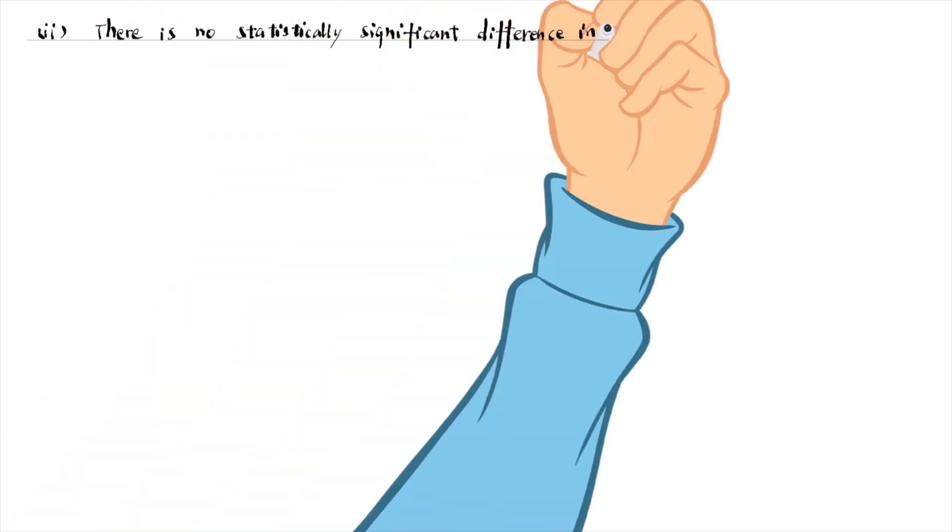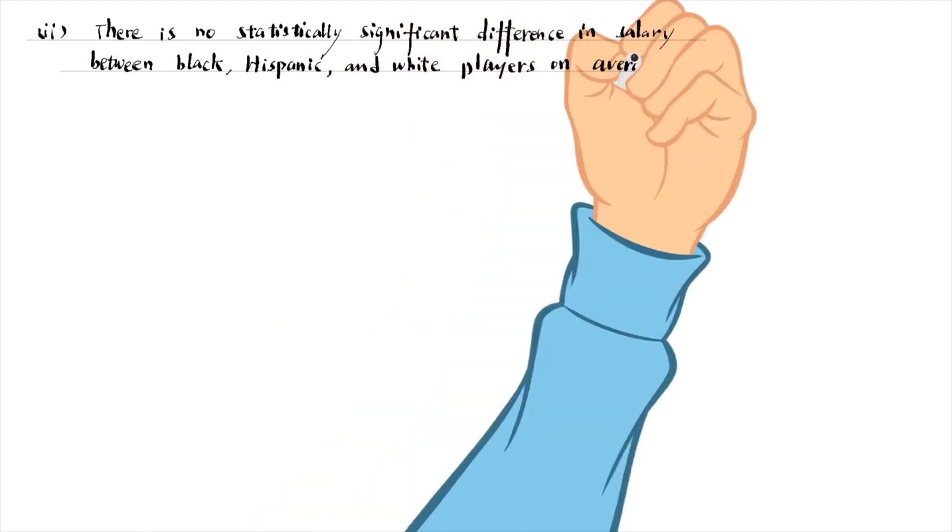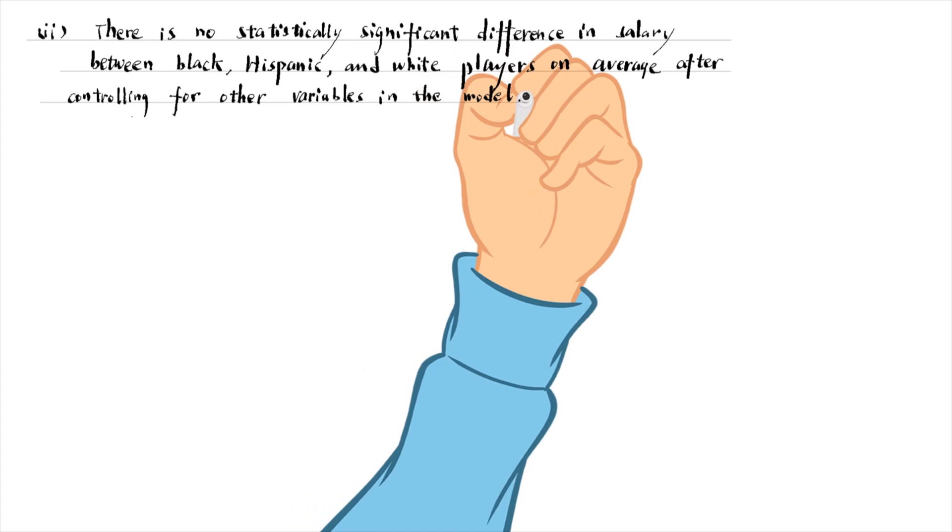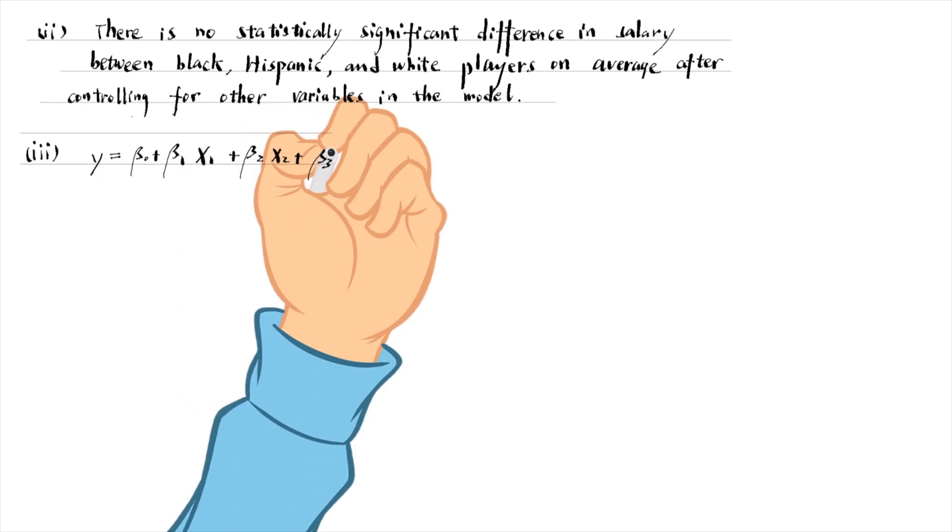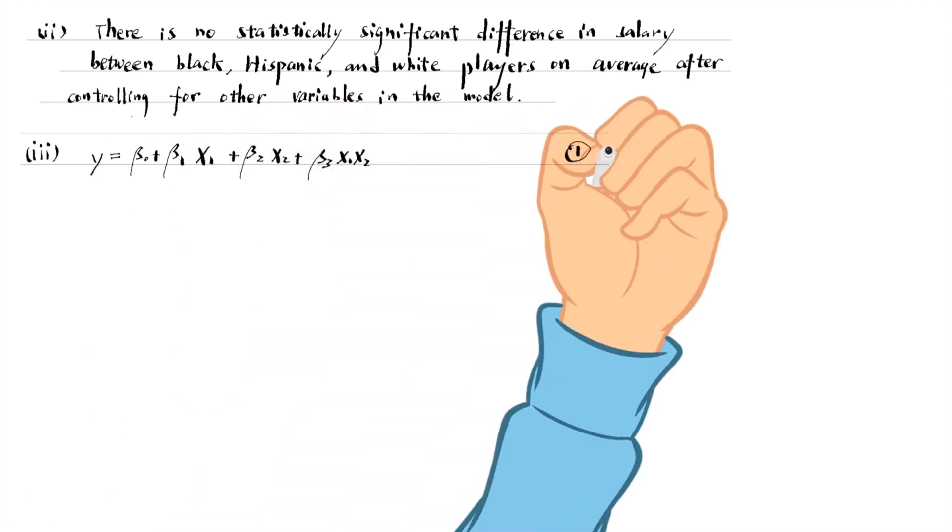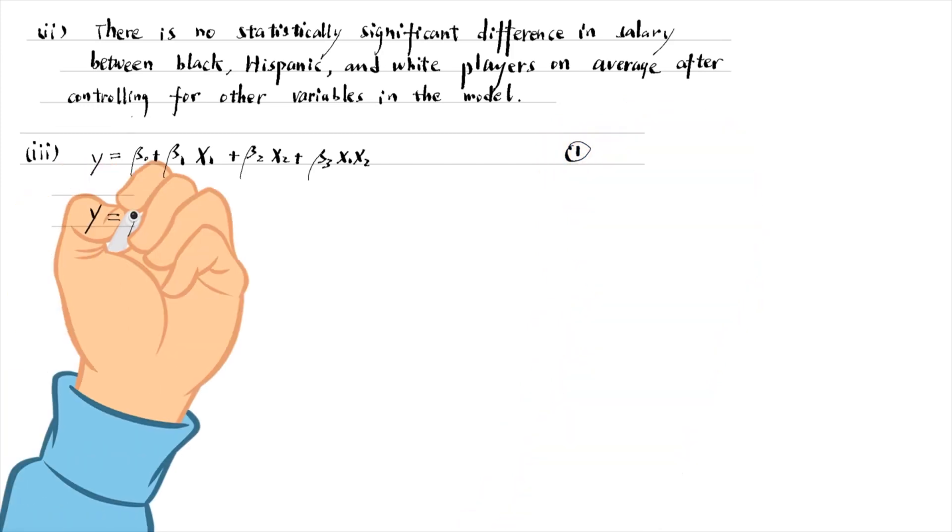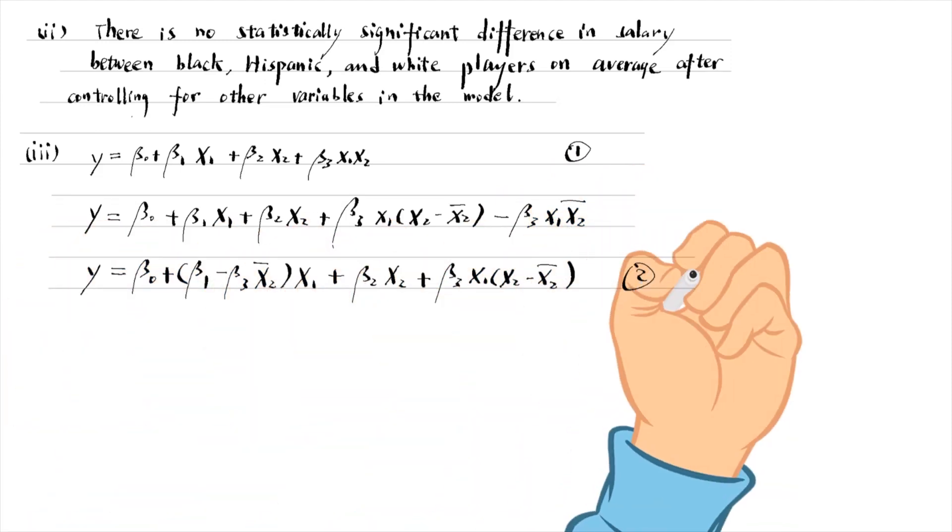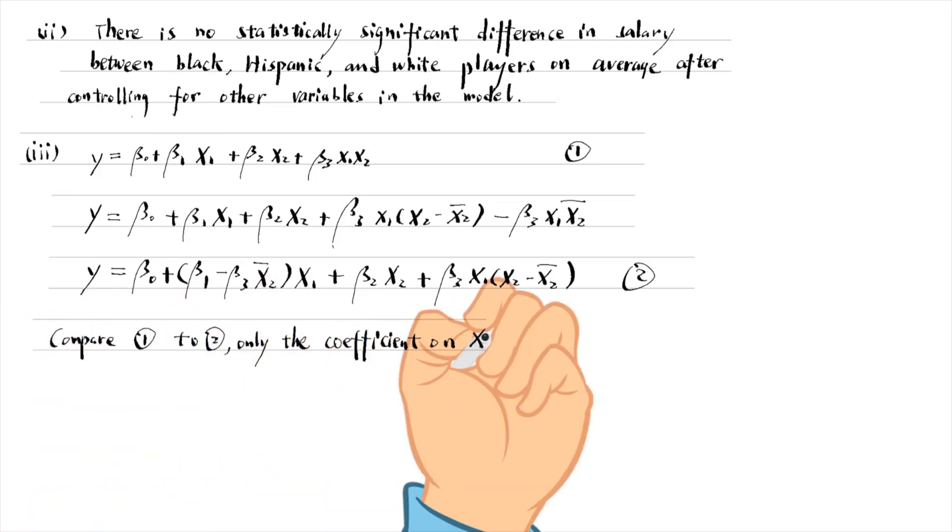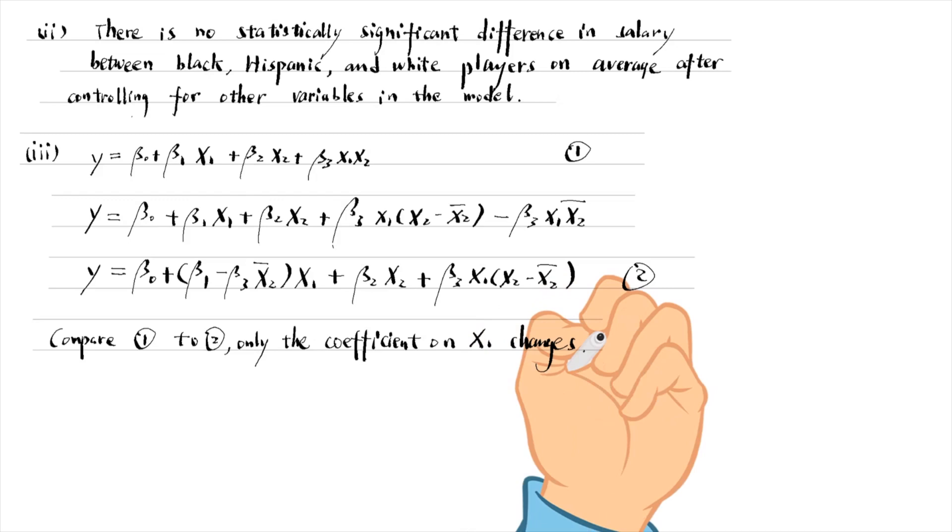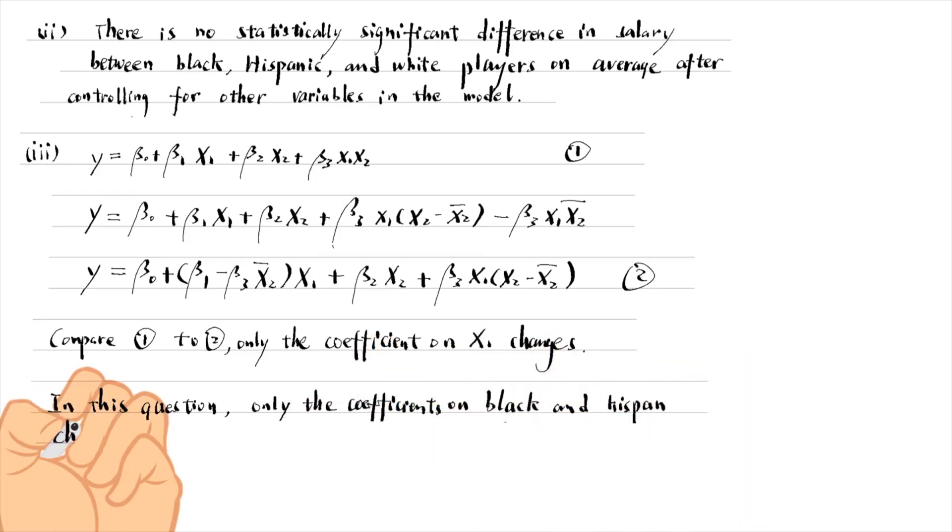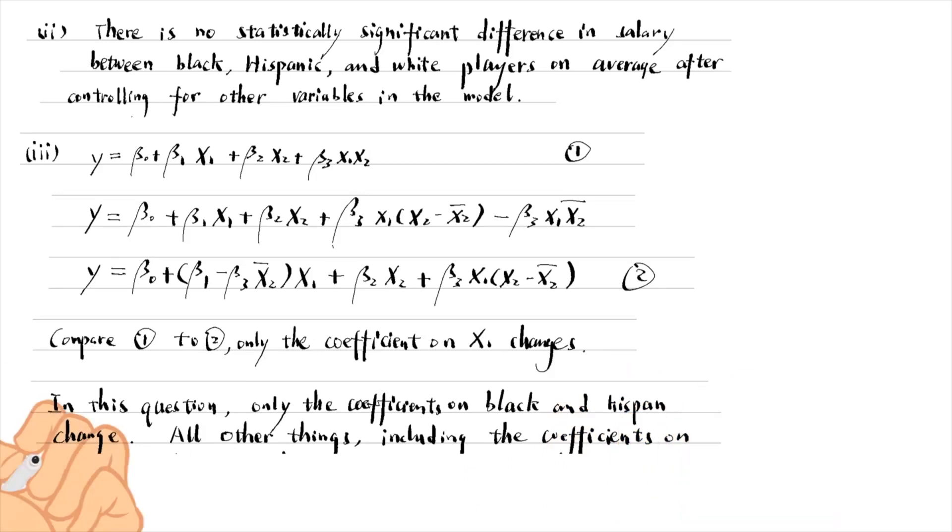For the second question, we conclude that there is no statistically significant difference in salary between black, Hispanic, and white players on average after controlling for the other variables in the model. For the last question, we can prove that only the coefficients on the dummy variables change. Equation 1 contains the interaction term between x1 and x2, while equation 2 contains the interaction term between x1 and the mean x2. Comparing 1 and 2, we find that only the coefficient on x1 changes. In this question, only the coefficients on black and Hispanic change. The coefficients on the intercept, other variables, and the interaction terms are unchanged.